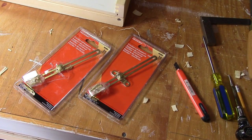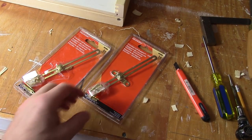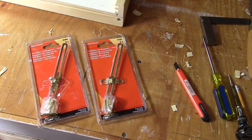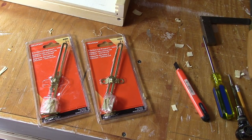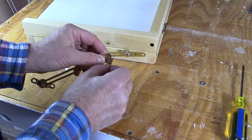Now I'm going to make two lid support arms using these off-the-shelf friction lid support arms that I need to modify a bit.